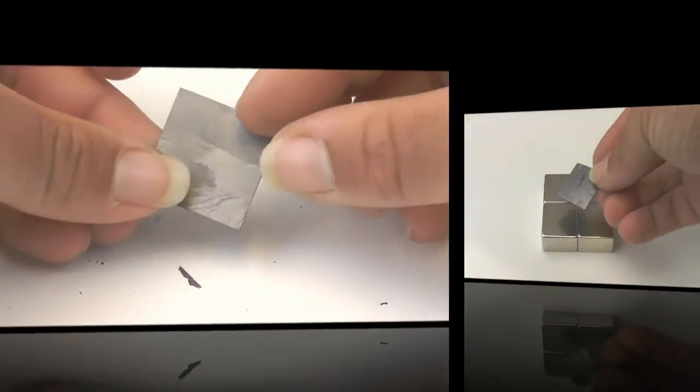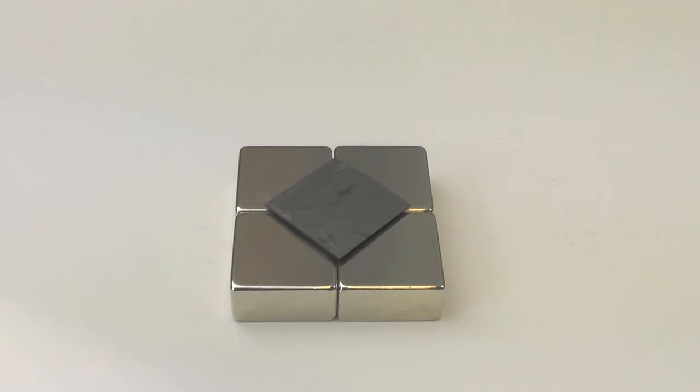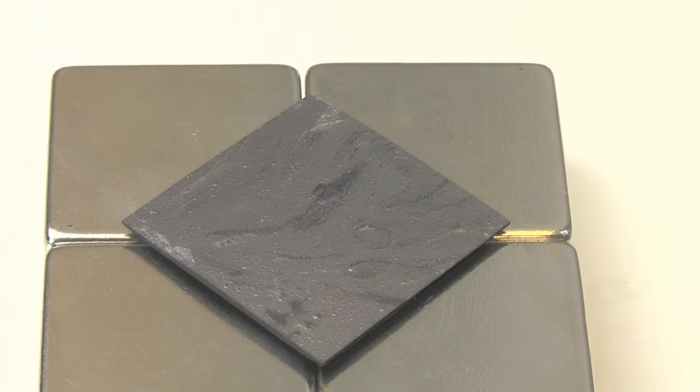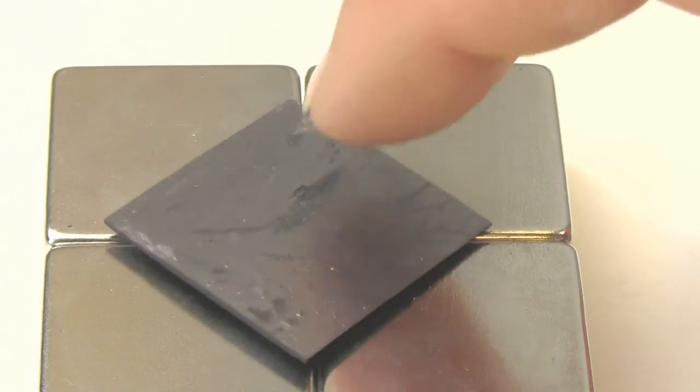Once cut, simply place the graphite as shown. The intersection of the four magnetic fields combined with the repulsion of the pyrolytic graphite and the counterbalancing force of gravity create a stable levitation.